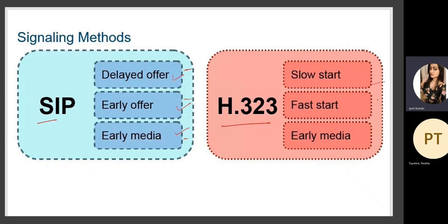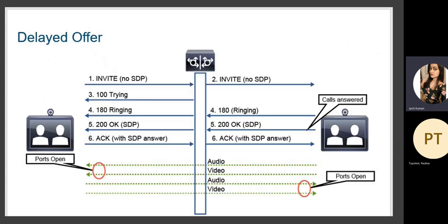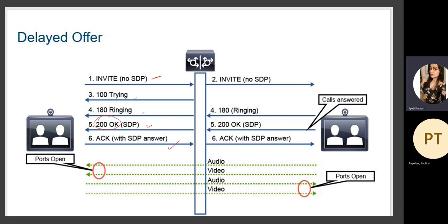For H.323, CUBE supports slow start, fast start, and early media — the same signaling methods are supported. In the delayed offer flow, no SDP is in the INVITE; it is exchanged later through SIP messages like Trying, Ringing, and 200 OK with SDP, after which the called device acknowledges with SDP and ports are opened for audio and video RTP communication.